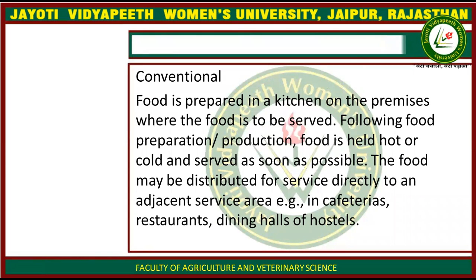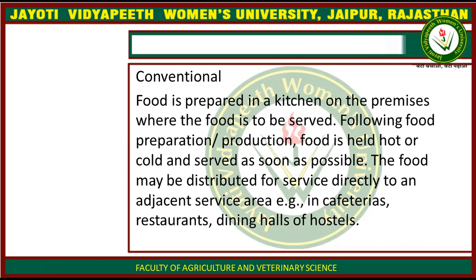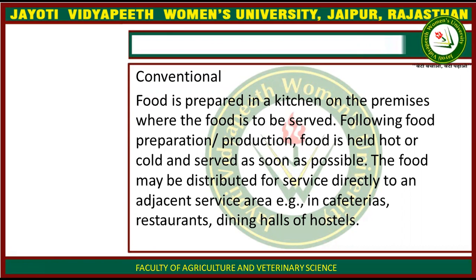Starting with the conventional form. Conventional food service establishment is when you prepare your food in the kitchen or on the premises where your food is served. Food production is in hot and cold condition and then served as soon as possible. The most common examples are cafeterias, escort, dining halls, and hostels.